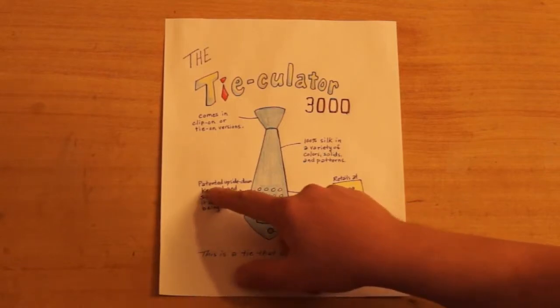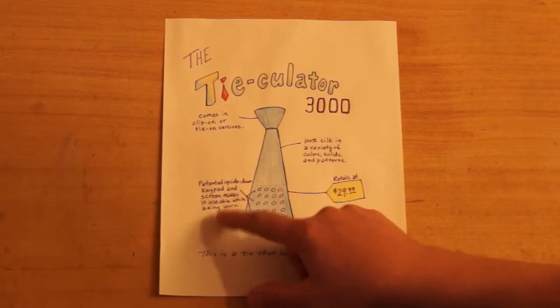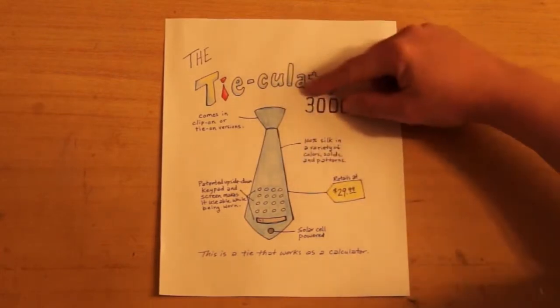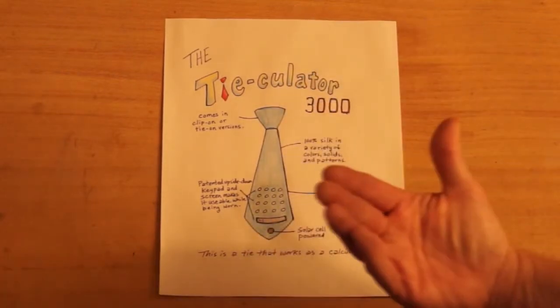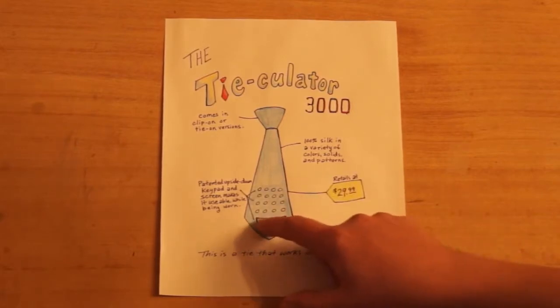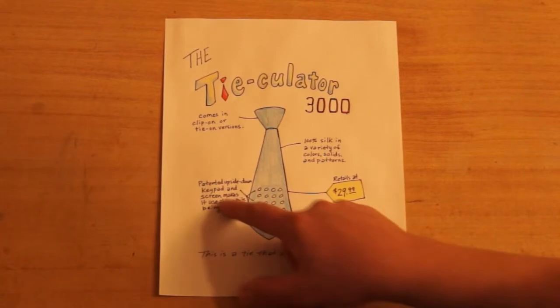So I have a label here that explains this is a patented upside-down keypad and screen. It makes it, patented upside-down keypad and screen makes it usable while being worn. So the idea is that the person wearing it can look down at it and lift up the end of the tie and do your calculations on it. And there's a screen right there. So that's part of what's being labeled, the keypad and the screen.